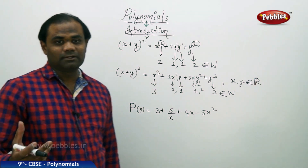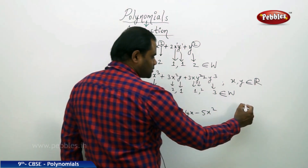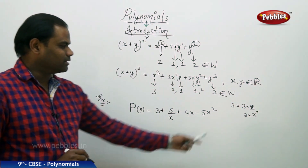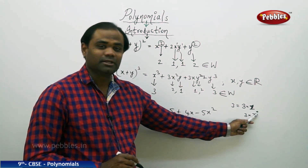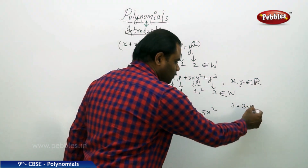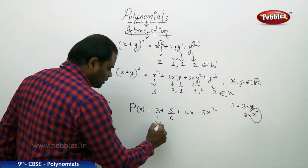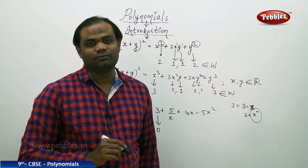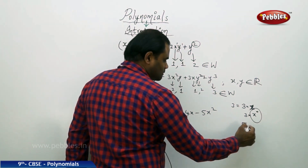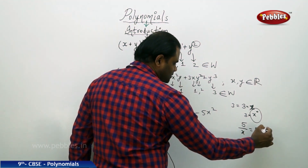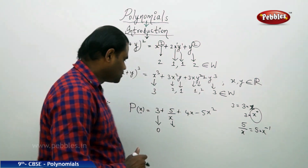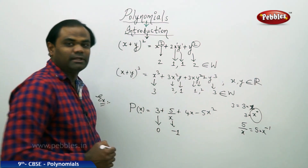Let's check the power of each term. The constant 3 can be written as 3 × x⁰, so the power of x is 0. For the term 5/x, this equals 5 × x⁻¹, so the power of x is −1. For 4x, the power of x is clearly 1. So the powers extracted from each term are: 0, −1, 1, and 2.